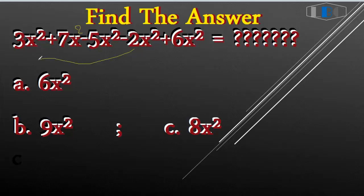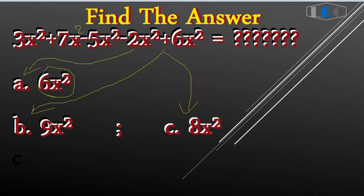Below the problem you can choose one answer. The choices are: A is 6x², B is 9x², and C is 8x². So now, before you choose, let's work through it.